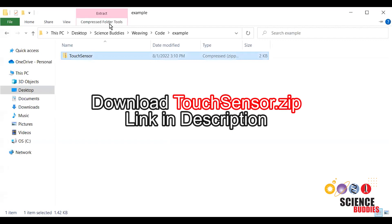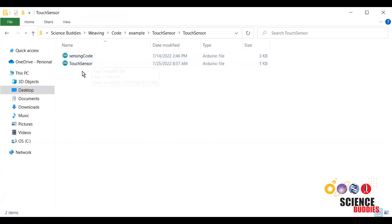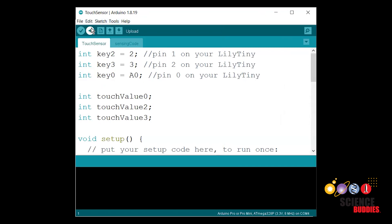Download TouchSensors.zip. Extract the folder. Then, open TouchSensor.ino in the Arduino IDE. Upload onto your Tiny Lily.